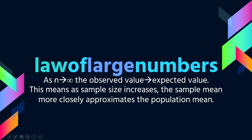The law of large numbers says that as n approaches infinity, the observed value approaches the expected value. This means that with larger sample sizes, the sample mean will more closely approximate the population mean, assuming equality in all other things. So large samples are generally going to provide better estimates, so long as the sample is randomly selected from the population and therefore likely to be representative.